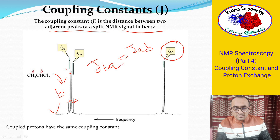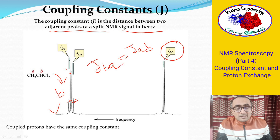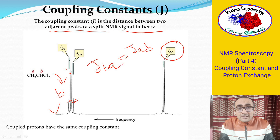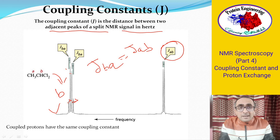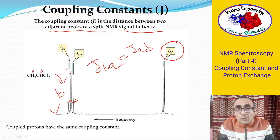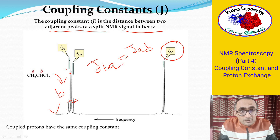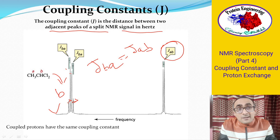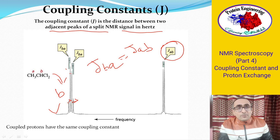Coupled protons always have the same coupling constant. This means if two protons are in each other's neighborhood and splitting each other's signal, they will have identical coupling constants. This is very important information because in complex spectra with many peaks, you can identify peaks that share the same J value — this tells you those protons are nearby and splitting each other's signal.